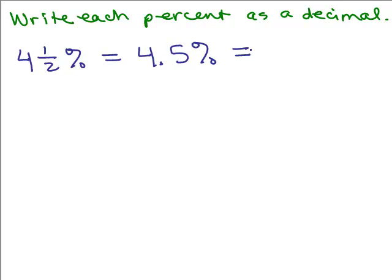So this is the same as four point five percent. All I'm doing is I'm not changing the percent to a decimal yet. All I'm doing is rewriting four and a half as four point five. And now I can change this to a decimal by just moving it two to the left, point zero four five. So four and a half percent is written as point zero four five.